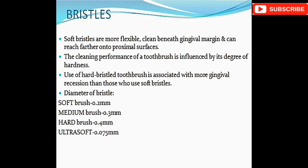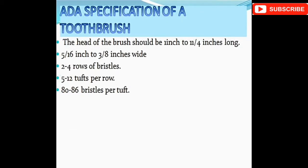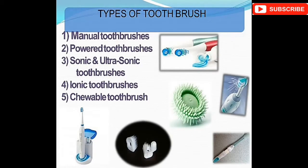The cleaning performance of a toothbrush is influenced by its degree of hardness; use of hard bristles is associated with potential harm. The ADA specification of a toothbrush is 5 to 16 inches by 3 to 8 inches wide, with 5 to 12 tufts per row and 80 to 86 bristles per tuft. The types of toothbrush are manual, power, sonic and ultrasonic, ionic, and chewable toothbrushes.